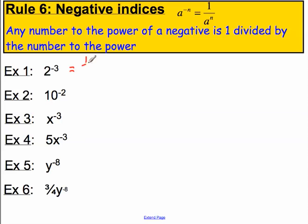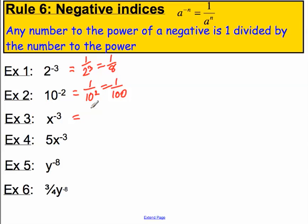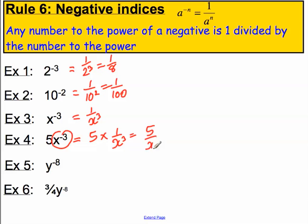2 to the minus 3 must equal 1 over 2 to the positive 3, which is 1 over 8. 10 to the minus 2 must equal 1 over 10 to the positive 2, which is 1 over 100. X is our base here, not a number. X to the minus 3 must be 1 over X to the positive 3 — we can't work out X to the 3, so we'll just leave it like that. If 1 times X to the minus 3 is 1 over X to the 3, the question is what is 5 of these? Well it must be 5 times 1 over X to the 3, which is simply 5 over X to the 3.